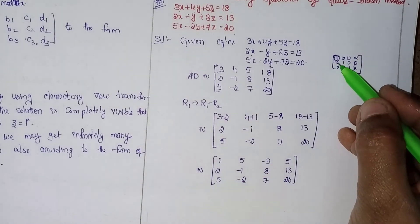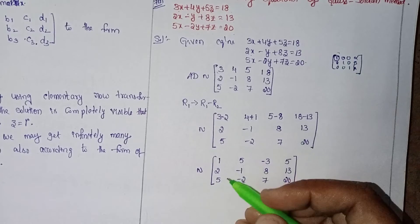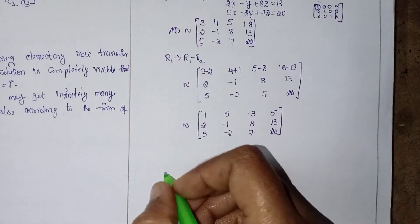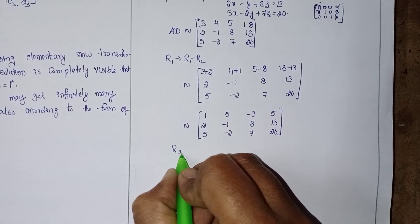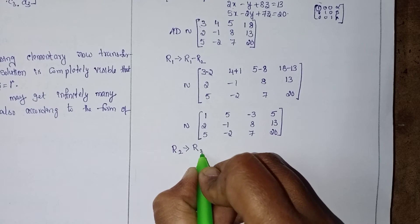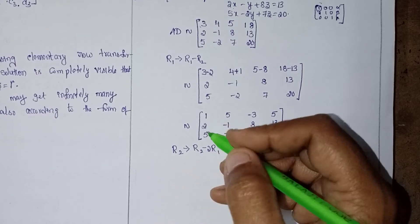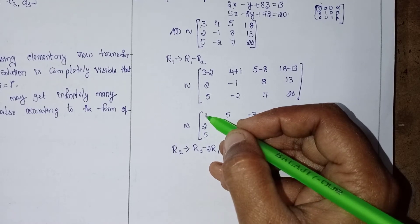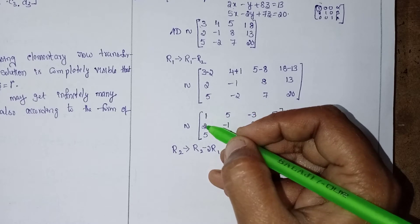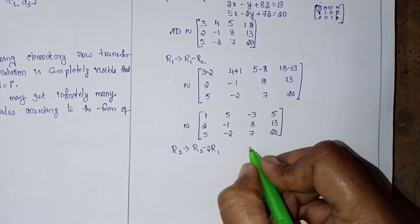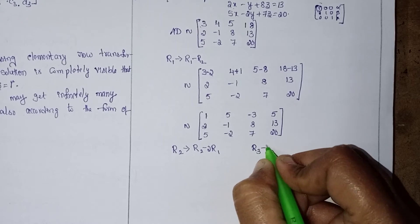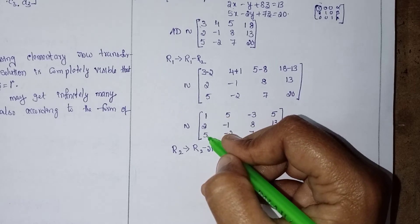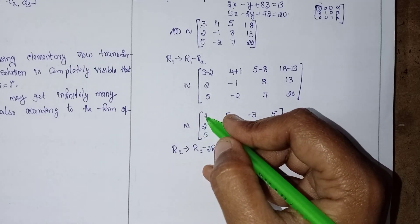Next, convert the remaining two elements of the first column into 0. For R2, the operation is R2 → R2 − 2·R1. 2 times R1 is 2 into 1, which is 2; then 2 minus 2 equals 0. Similarly for R3, since 5 is there, multiply with 5: the operation is R3 → R3 − 5·R1.